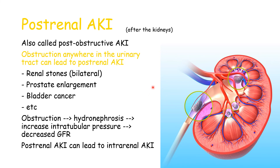If only one kidney is blocked, you wouldn't see an increase in creatinine or a decrease in urine production — hence you wouldn't have AKI. Another very common cause of obstruction is prostate enlargement, which pretty much every man will suffer from in their lifetime. If the prostate is enlarged enough, it compresses against the urethra and urine cannot be excreted. Bladder cancer and anything else causing obstruction in the urinary tract can also cause post-renal AKI.